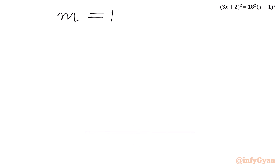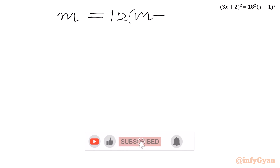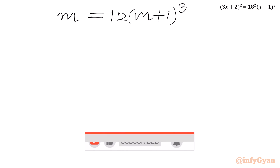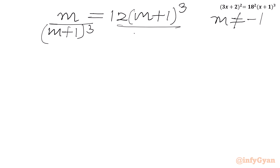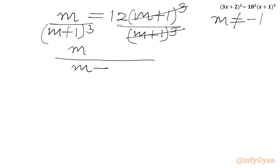So we have m = 12(m + 1)³. Now if we put m = -1, then LHS will be -1 and RHS will be 0, so m cannot equal -1. Now I will divide both sides by (m + 1)³. Cancelling, we get m over (m + 1)³ = 12.